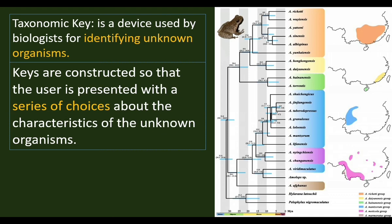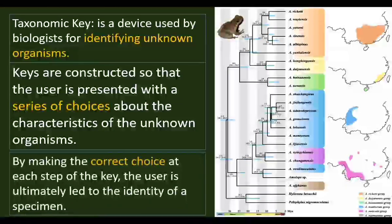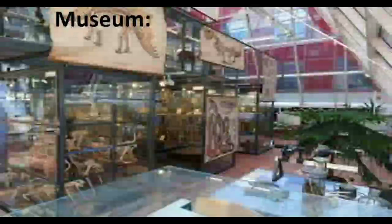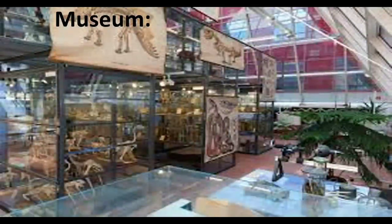We have to select one choice, and the choice will inform us what to select next. If we carefully select the choices in a step-by-step manner, finally we will identify the specimen and determine which species it belongs to. In this way, taxonomic keys are useful in identifying unknown organisms.